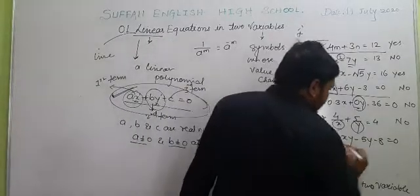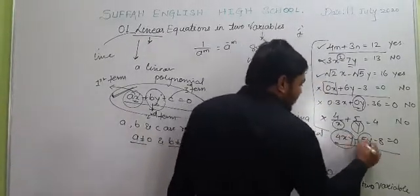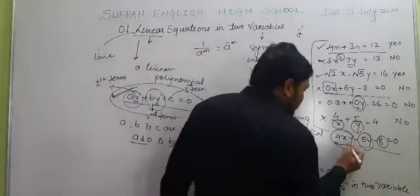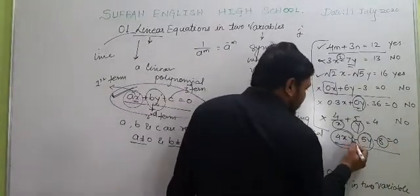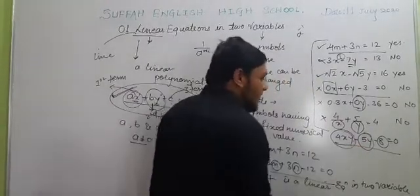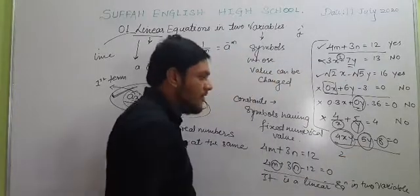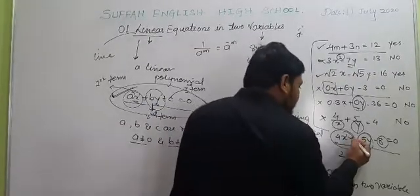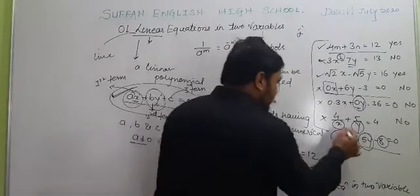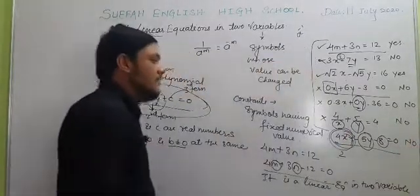For the equation 4XY + 5Y − 8 = 0, the first term is 4XY where both variables X and Y are multiplied together in a single term. The index of X is 1 and the index of Y is 1, making the total degree of that term 2. Because the degree is 2, this is not a linear equation in two variables.